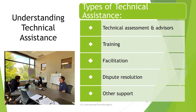Technical assistance can include a technical assistance needs assessment for the group, access to a technical advisor who can read or review, summarize, and clearly explain scientific reports, terms, or studies related to the site and provide their insight, training on various topics including technical and scientific concepts, environmental programs, policy and regulations, and environmental issues impacting the community, as well as facilitation support so that any controversies between CAG or community members can be avoided or resolved.